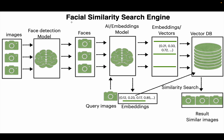In this application we are building a facial similarity search engine. There is one additional step: instead of creating embeddings directly from the images, we first apply a facial detection model to find the bounding boxes of faces within those images. We then extract only the facial parts — crop the images to get just the face — and use only those cropped images for creating embeddings. The downstream process is exactly the same as in the previous video.